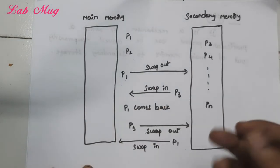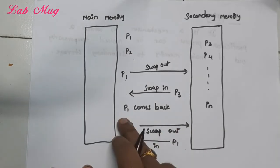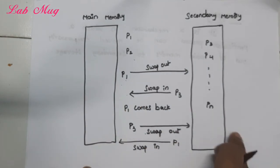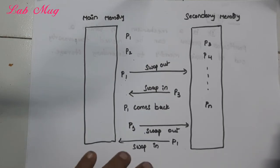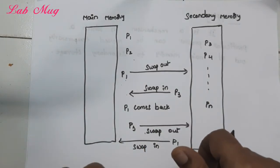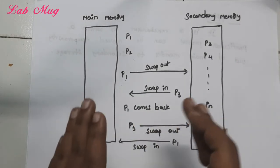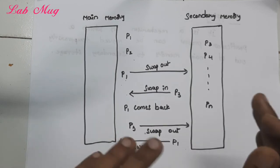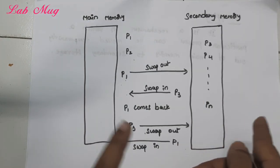Now P3 gets a chance from secondary memory — that is P3. If instead of P3 we want P1 to come back, suppose P3 has completed its task in main memory, then P1 comes back. For P1 to come back, first the memory here must be free. So for that, P3 is swapped out, and again P1 is swapped in. So whatever process we shifted from main memory to secondary memory, that process can again come back to main memory. So swap in means secondary memory to main memory, and swap out means main memory to secondary memory.